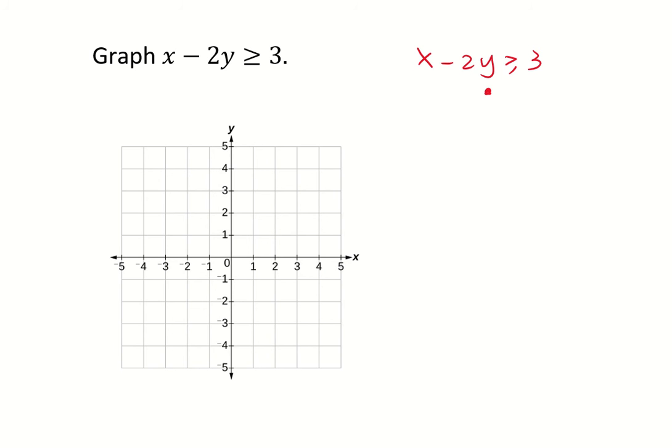I want to leave y by itself so I want to move everything to the right side. So subtract x on both sides. You have -2y is greater than or equal to -x + 3. Divide both sides by -2.